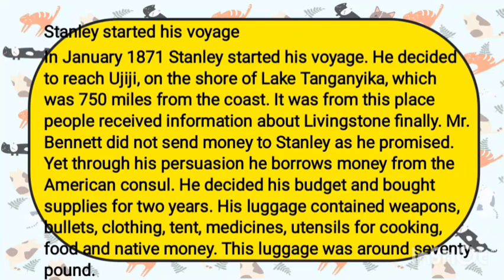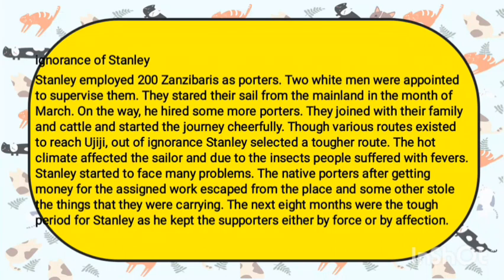This luggage was around 70 pounds. Stanley employed 200 Zanzibaris as porters. Two white men were appointed to supervise them. They started their journey from the mainland in the month of March. On the way, he hired some more porters who joined with their families and cattle and started the journey cheerfully. Through various routes available to reach Ujiji, out of ignorance Stanley selected a tough route. The hot climate affected the sailors, and due to insects, people suffered with fever. The native porters, after getting money for the assigned work, escaped, and some others stole the things they were carrying. The next eight months were a tough period for Stanley as he kept the supporters either by force or by affection.